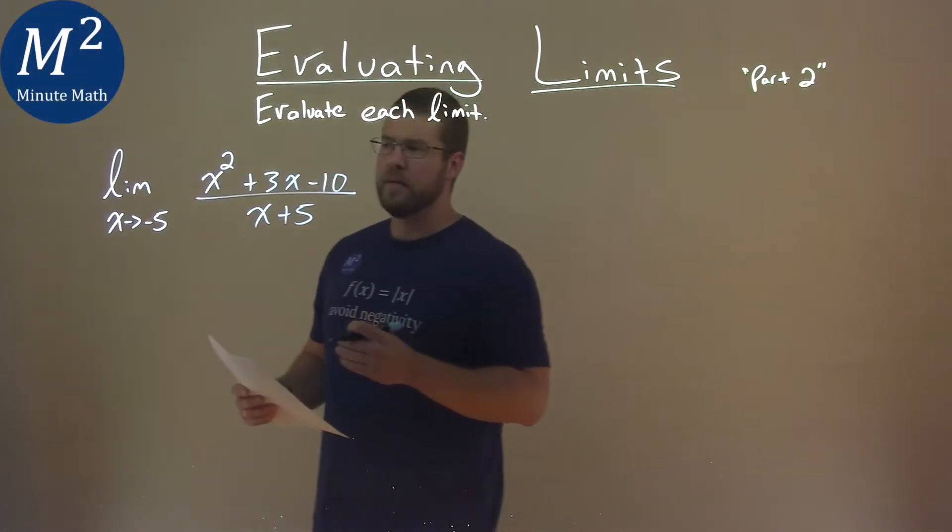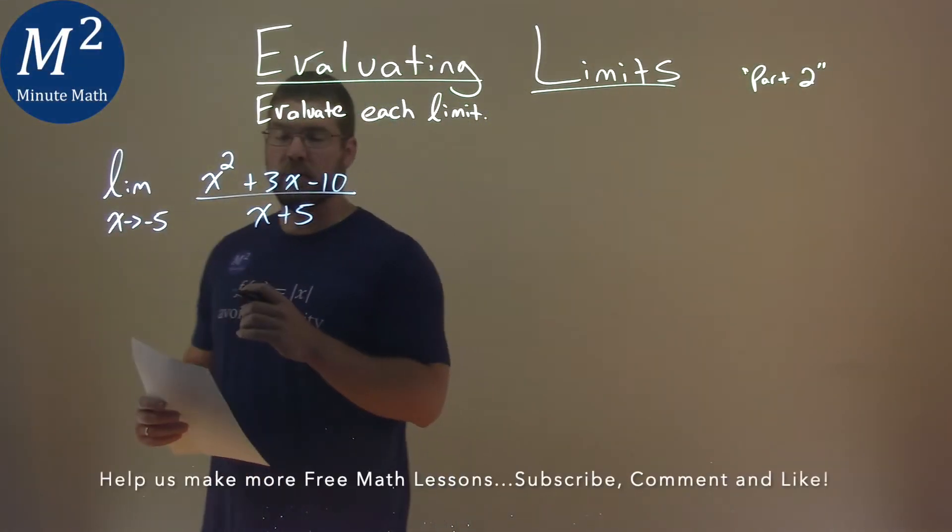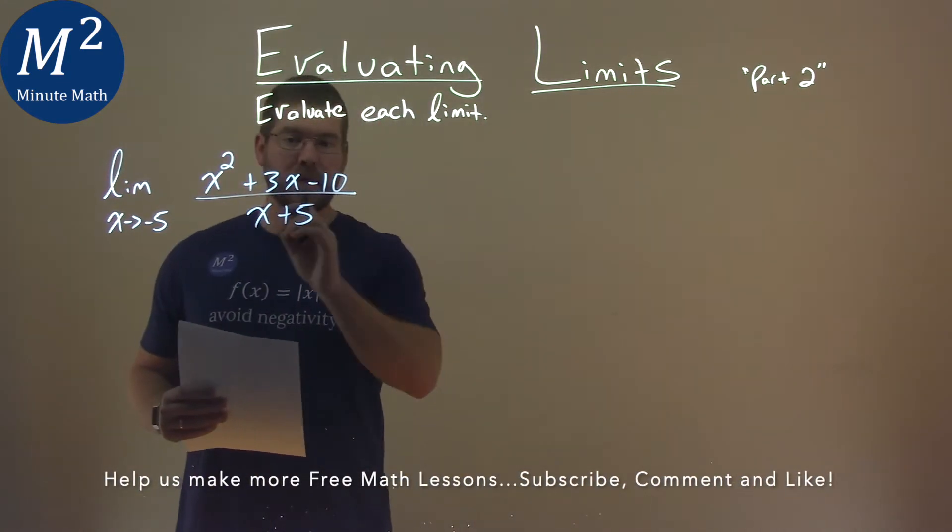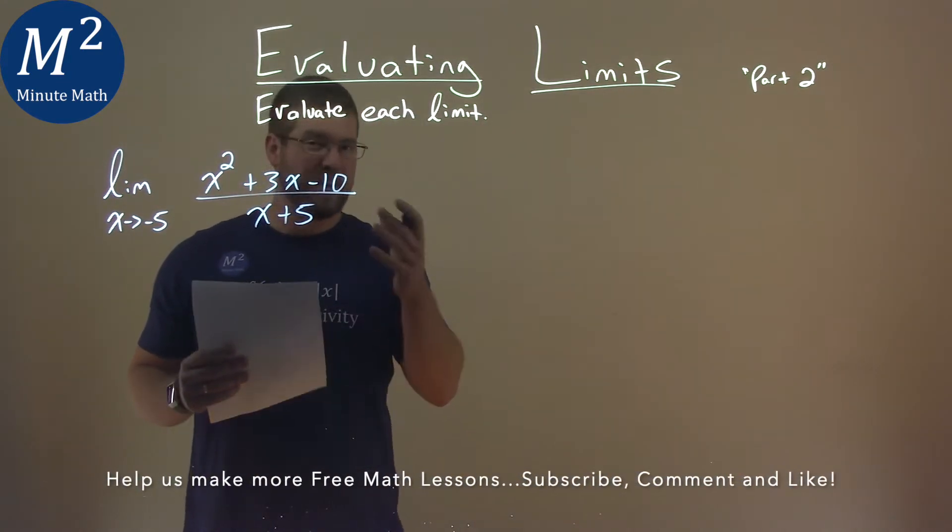We're given this problem right here: the limit as x approaches negative 5 of x squared plus 3x minus 10 over x plus 5. We're going to evaluate this.